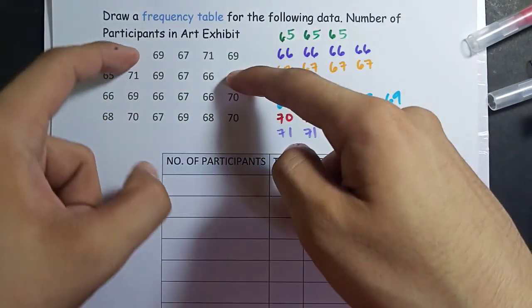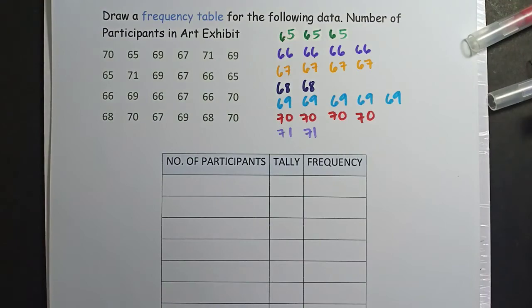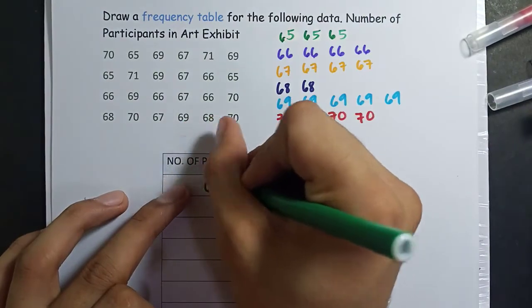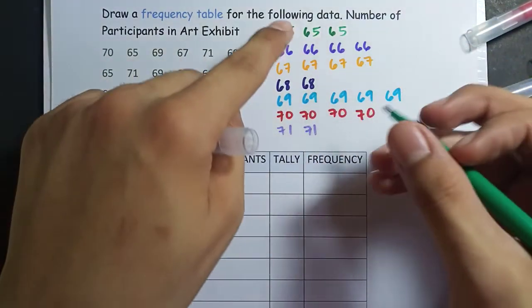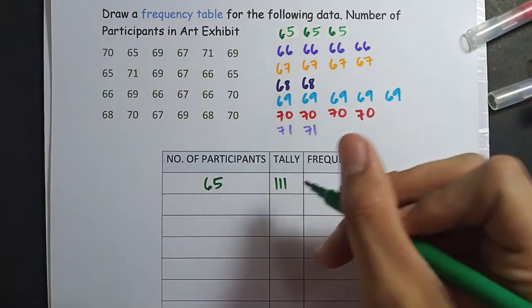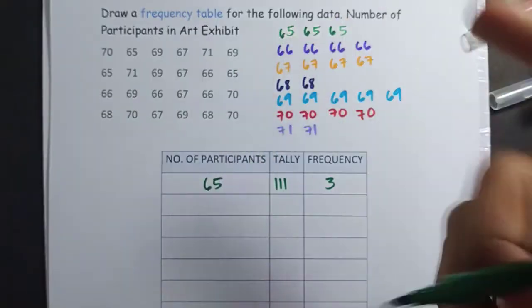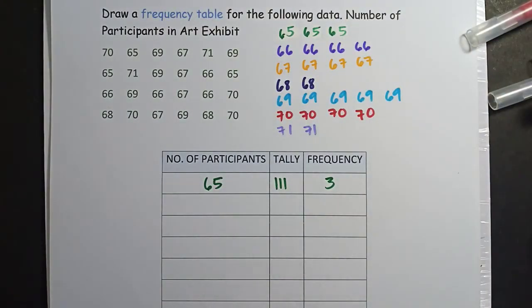The lowest is 65 and we have three 65s here. As you can see, count them, 1, 2, and 3. And the highest is 71. We have two 71s, 1, 2. We've already arranged it in ascending order. And all those that are the same, we'll put here. The number of participants. So we have 65. Let's put 65. Then the tally, we'll just mark it. How many 65 do we have? 1, 2, 3. The tally will be like this: 1, 2, 3. So its frequency, how many are there? How many tallies? How many marks is that? Three.